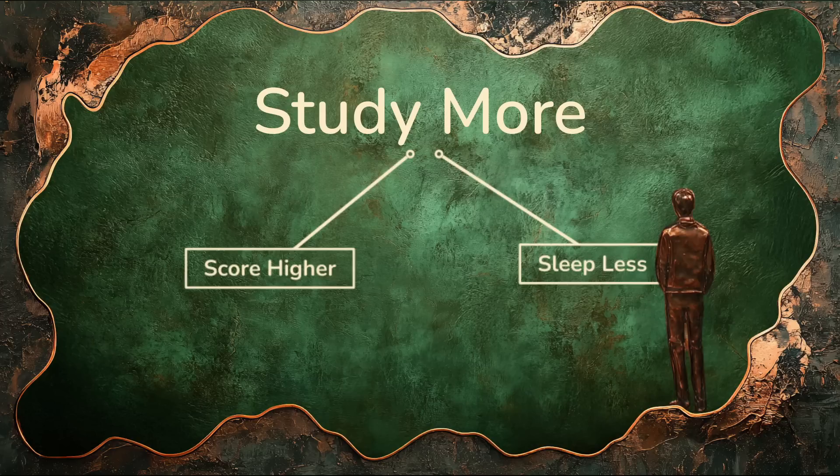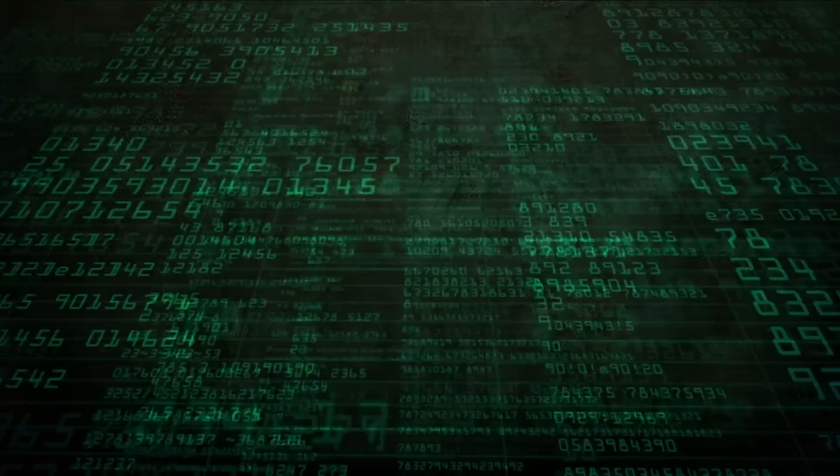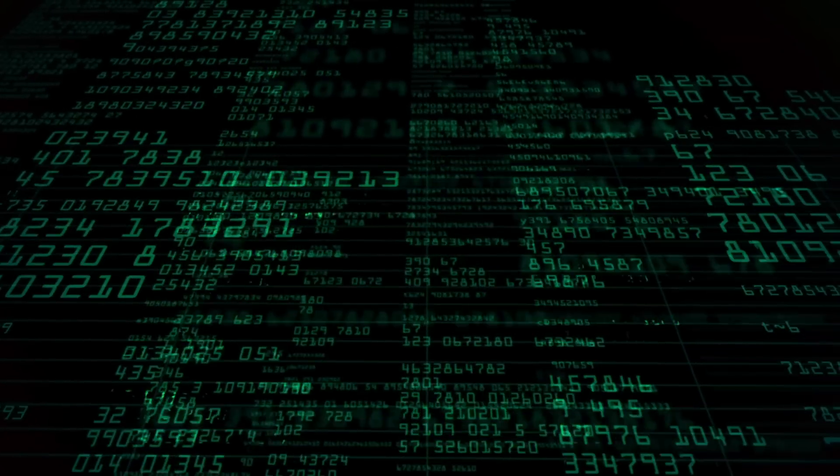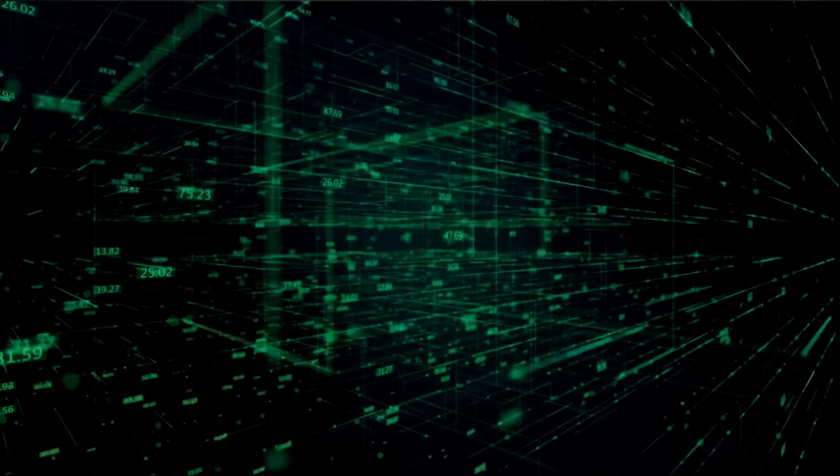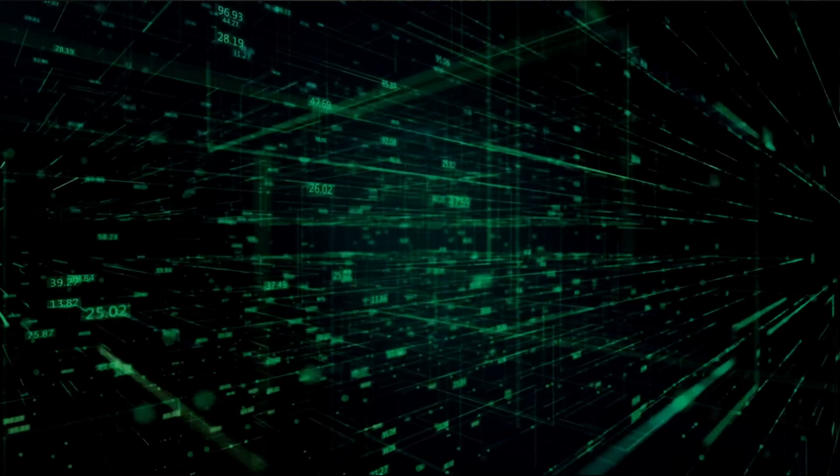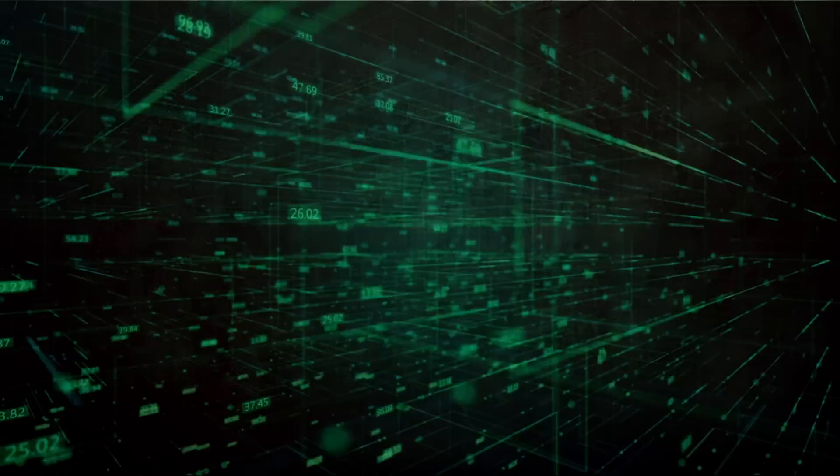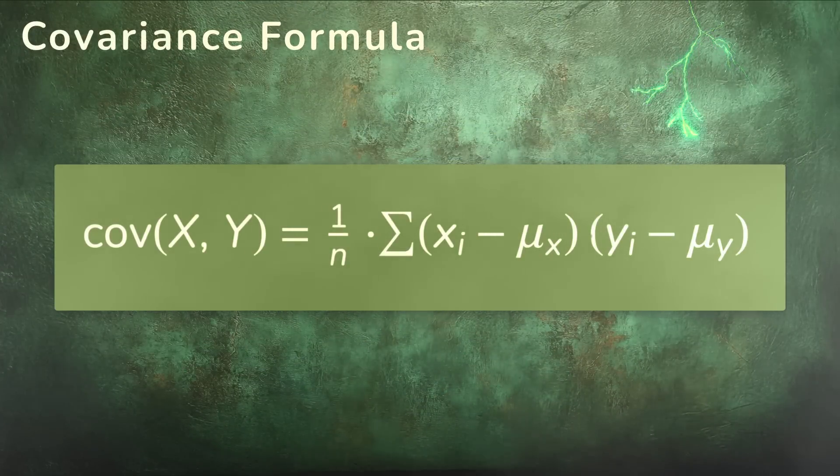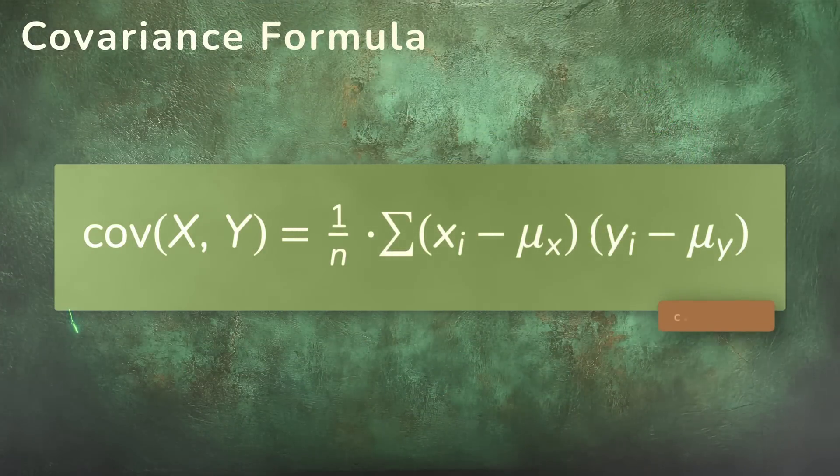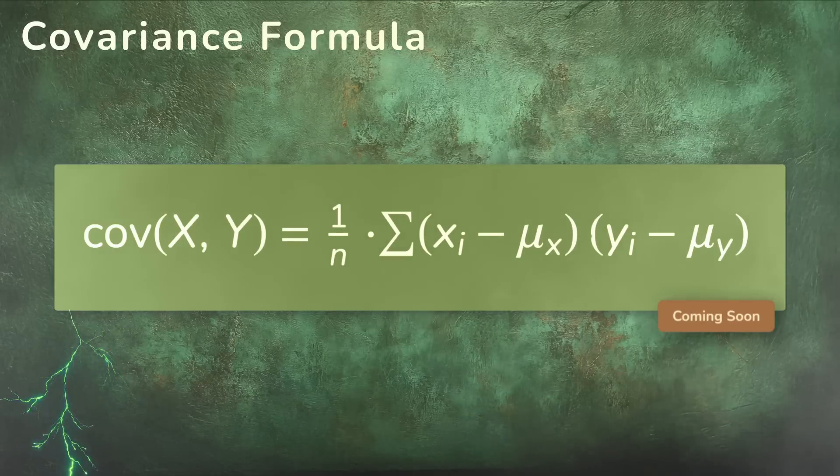But when you're analyzing big data, it's rarely that obvious. You're often dealing with millions or billions of observations where trends are hidden in the noise. And not all relationships are equal. Some are subtle, some are strong, and we need a way to measure that too. That's where the formula for covariance comes in. It gives us a precise way to quantify these relationships, even when they're not obvious at first glance.